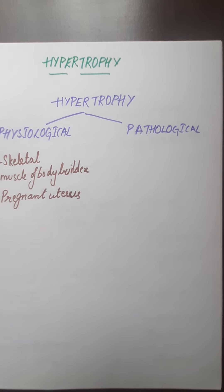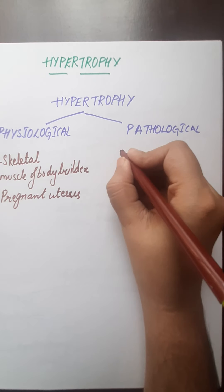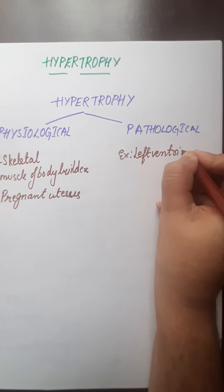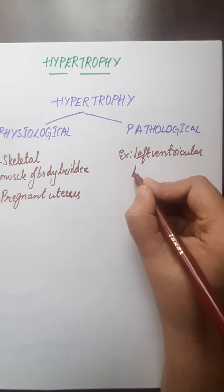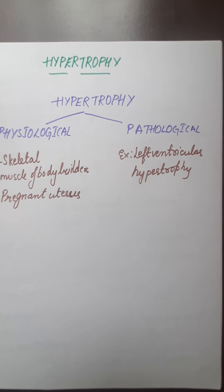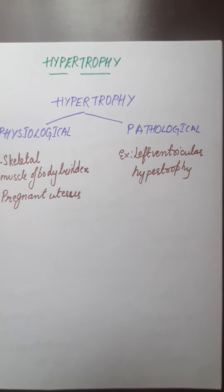In pathological hypertrophy, because of abnormal conditions there will be increase in cell size. For example, left ventricular hypertrophy occurs due to the heart working against an increasing afterload. Because of this, there will be increase in the size of the ventricle, resulting in left ventricular hypertrophy. This is the example of pathological hypertrophy.